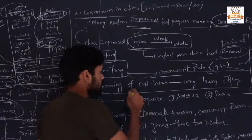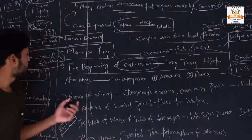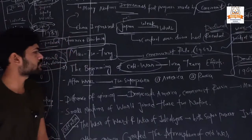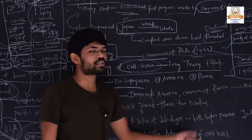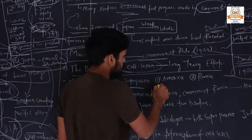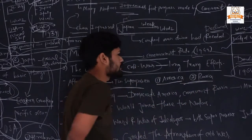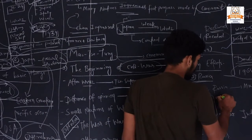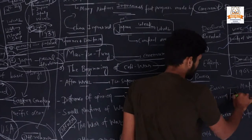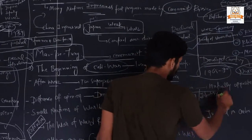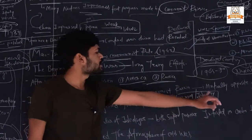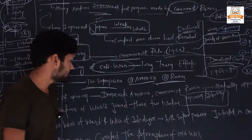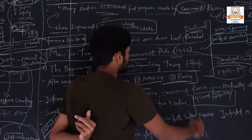The third long-term effect is the beginning of the Cold War. After World War 2, two superpowers emerged: first is America and second is Russia. Before World War 2, America and Russia were very good friends. But due to differences in opinion and ideology, these two superpowers became the biggest enemies of each other.